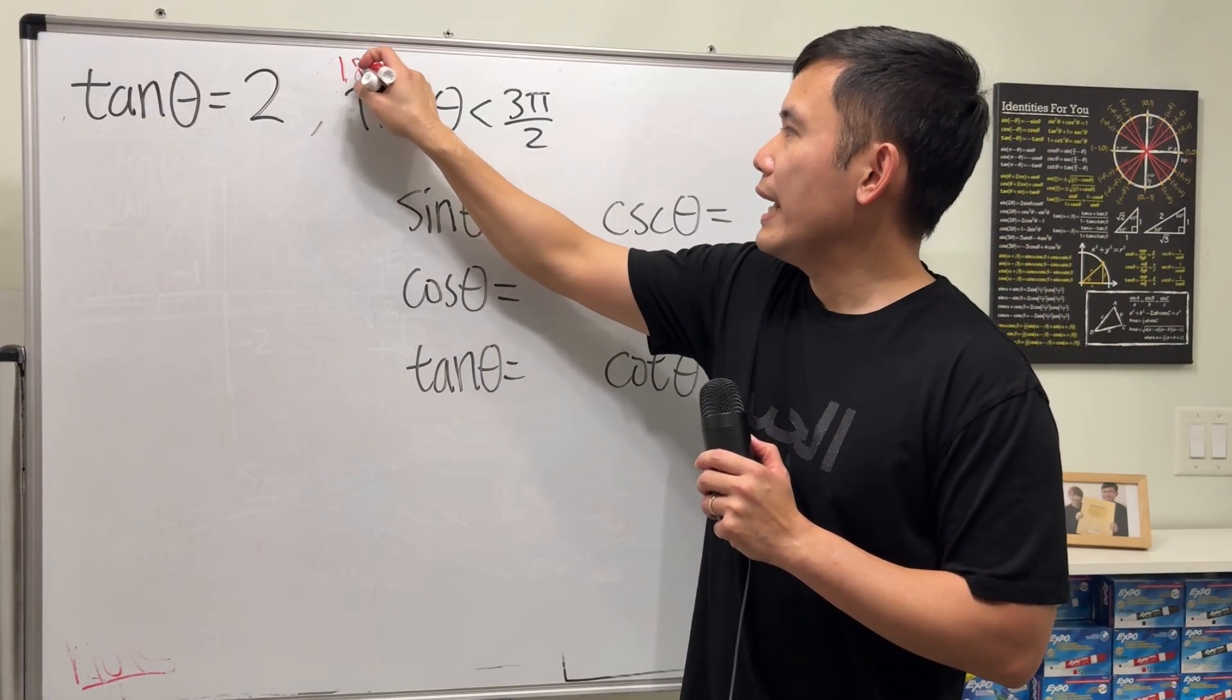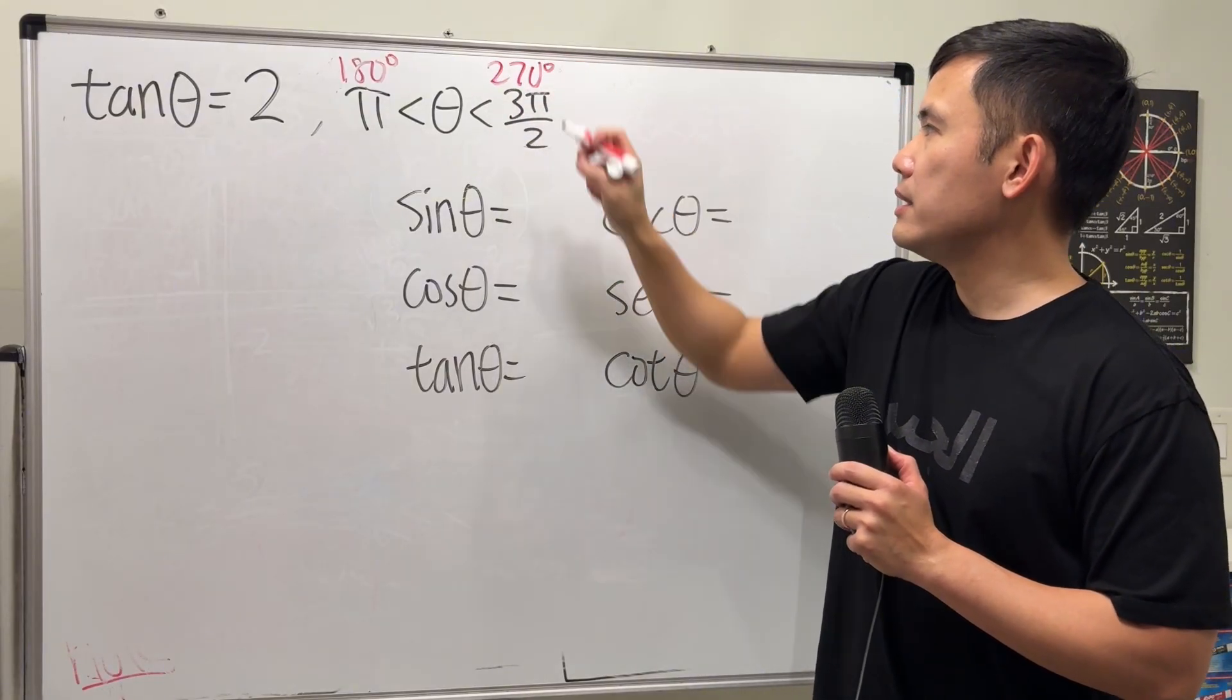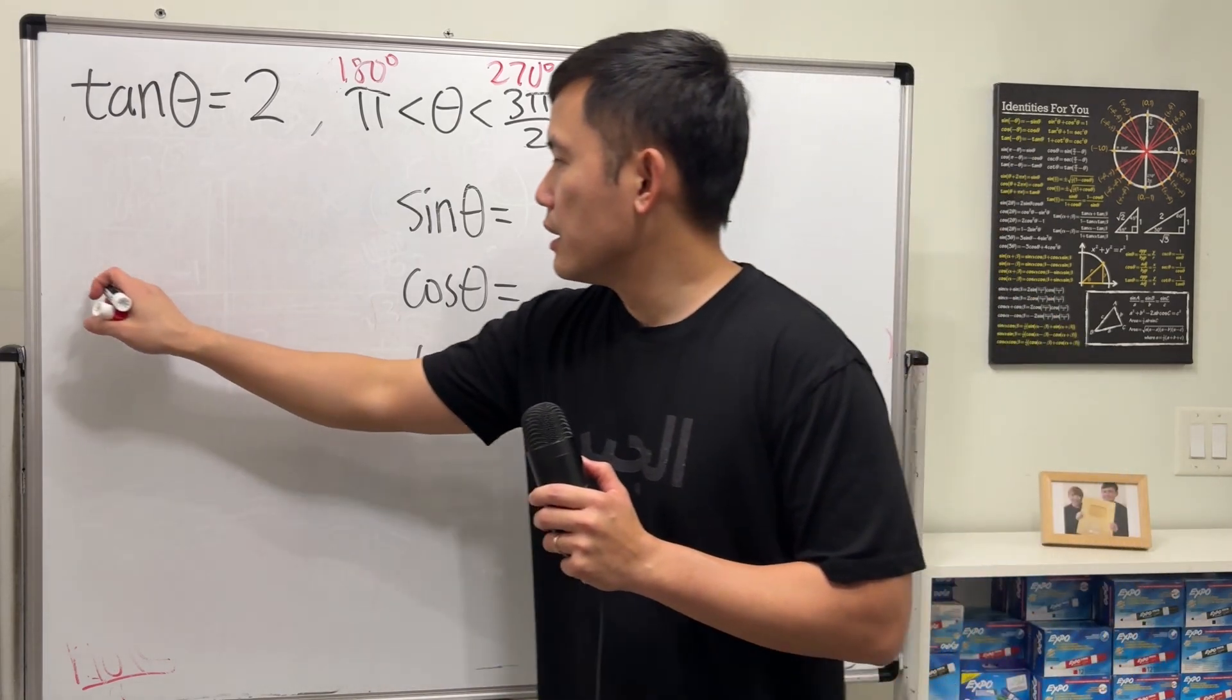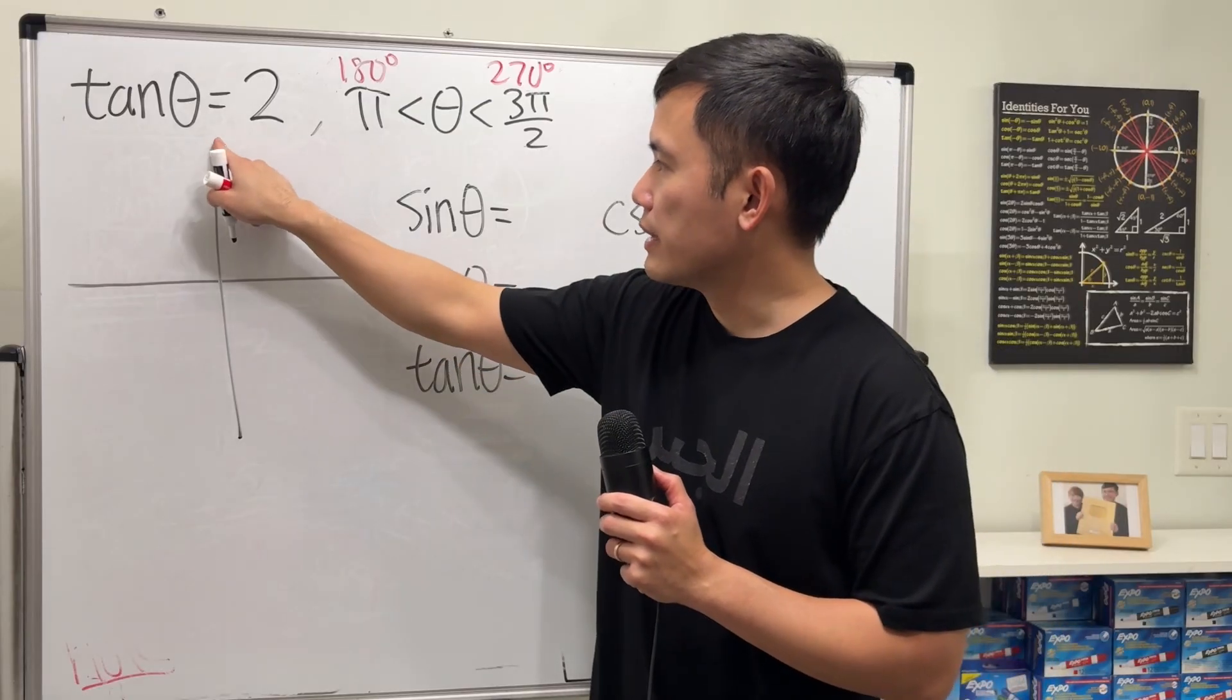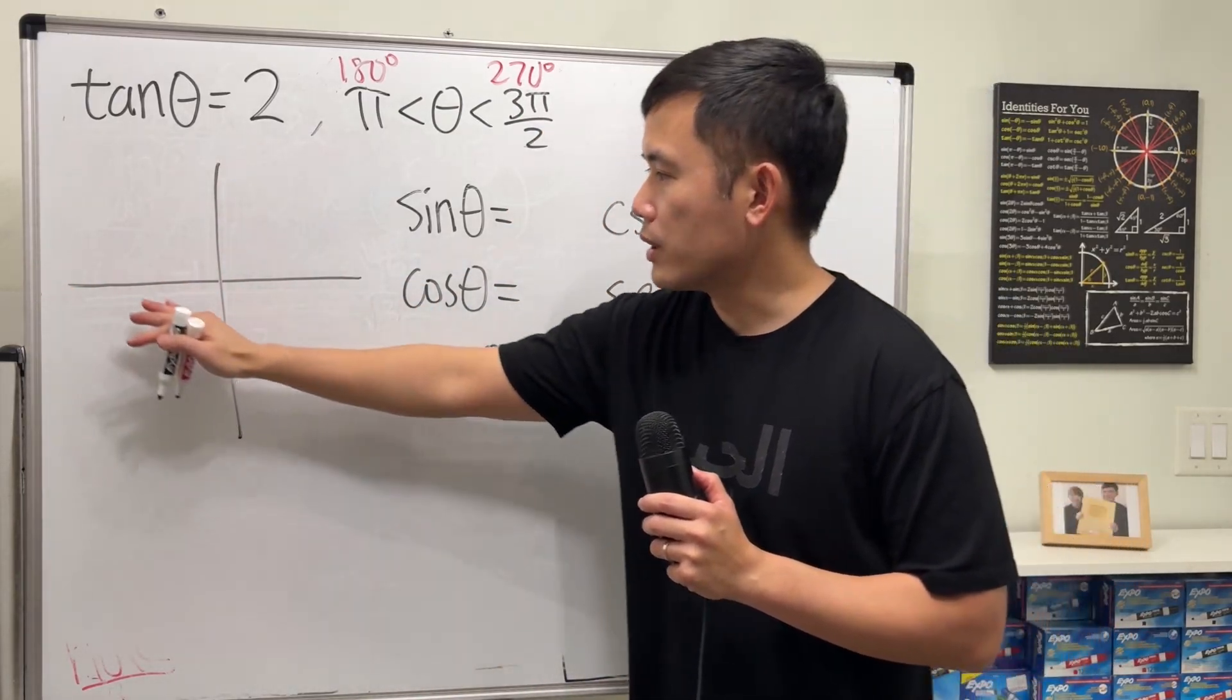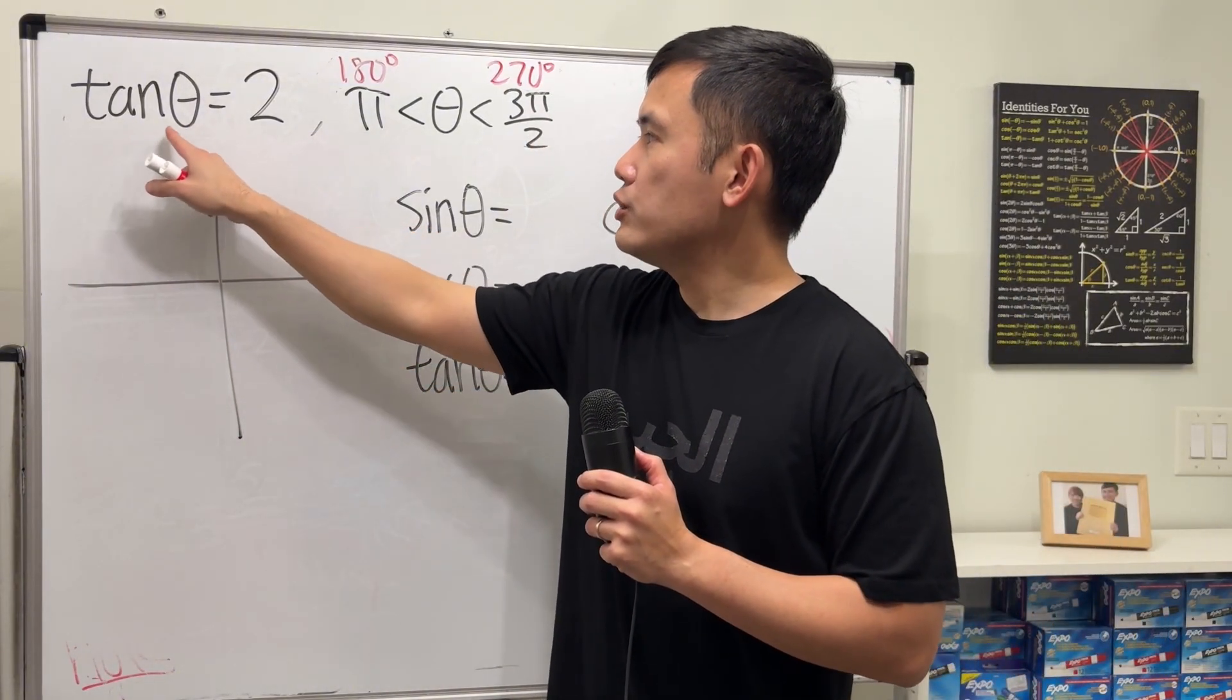π is the same as 180 degrees, and 3π/2 is the same as 270 degrees. So the angle that we want is in the third quadrant. Because if you look at the xy plane right here, this is 0, 90, 180, and 270 degrees. We want the picture to be right here.